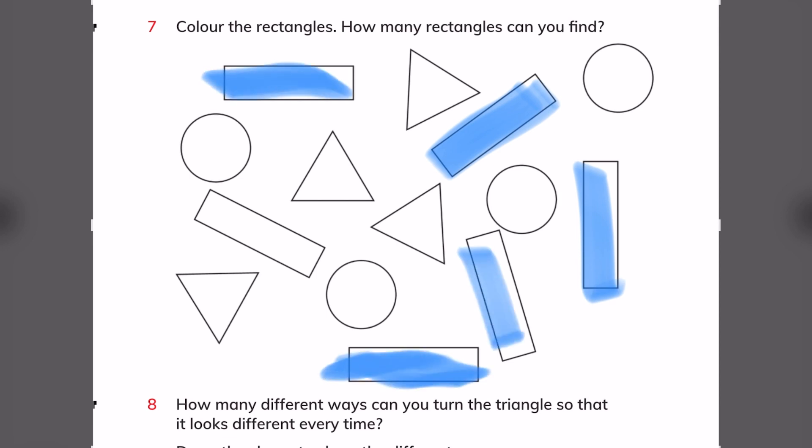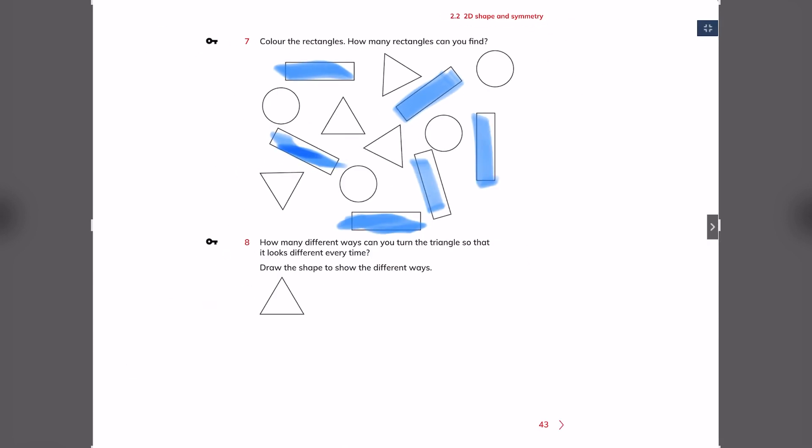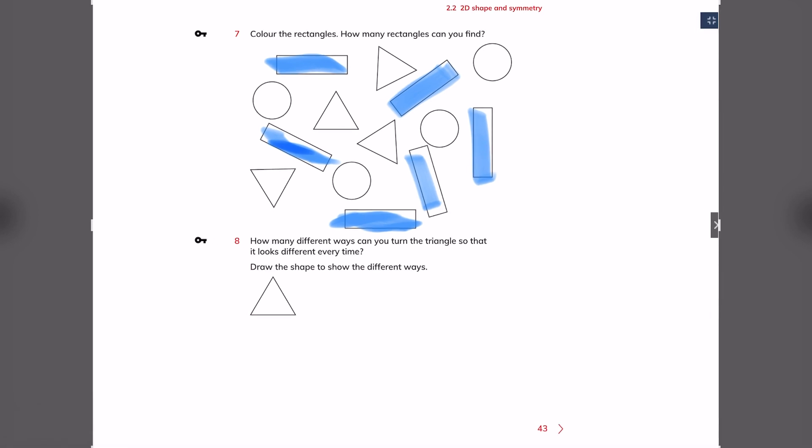Okay, and tell me how many rectangles do you see. Right after that, how many different ways you can turn the triangle so that it looks different every time? How many times can you turn this triangle so it looks different every time? For example, we can do a triangle like this and it's different. We can do a triangle like this and it's different. And we can do it like this, and you can do it like this and it's also different.